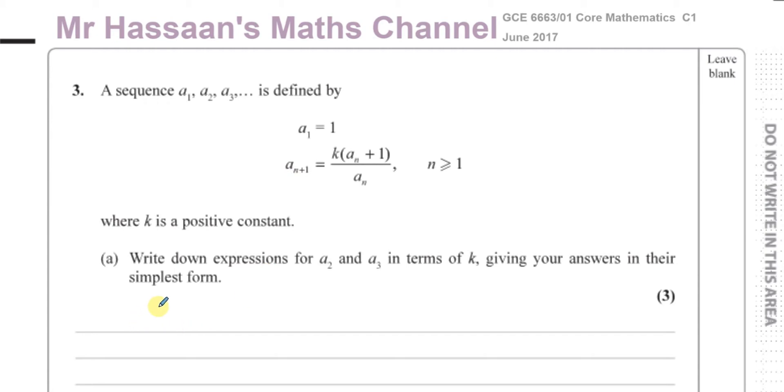I want to find what a2 is, so a2 is going to be k times the previous term which is a1 plus 1 over a1. Now I just put the value of a1 in which is 1, so it's going to be k times 1 plus 1 over 1 which of course gives you 2k. So that's a2.